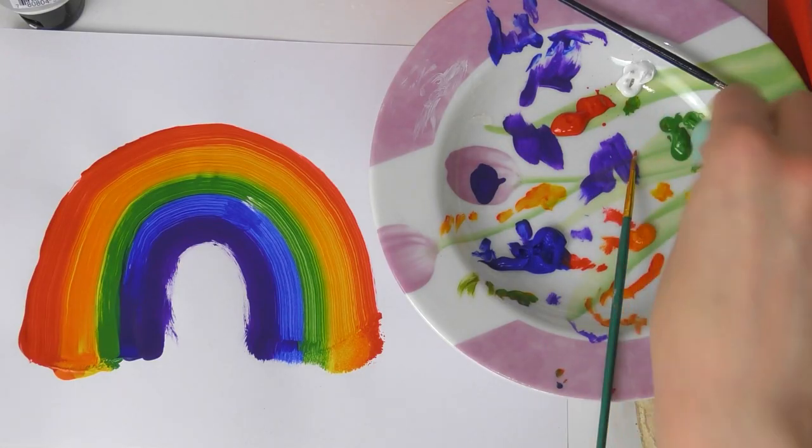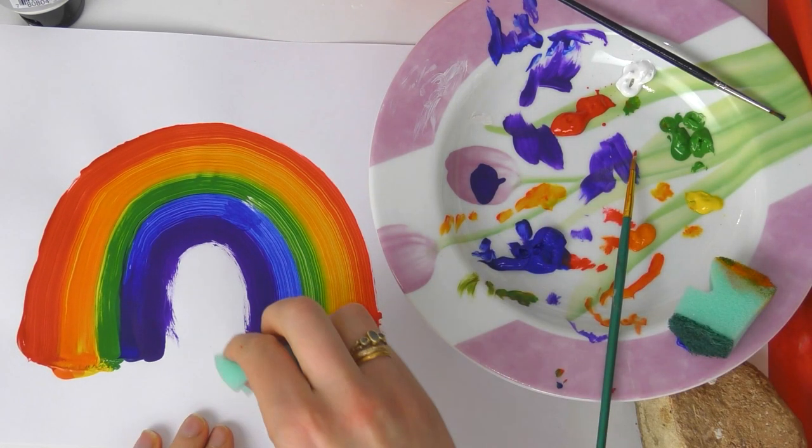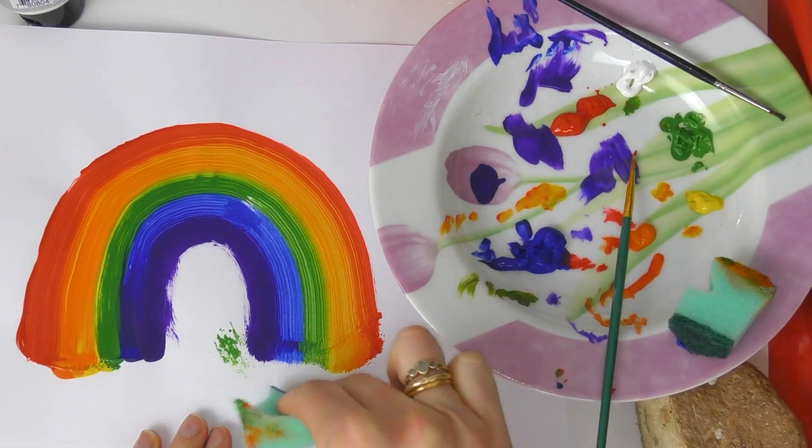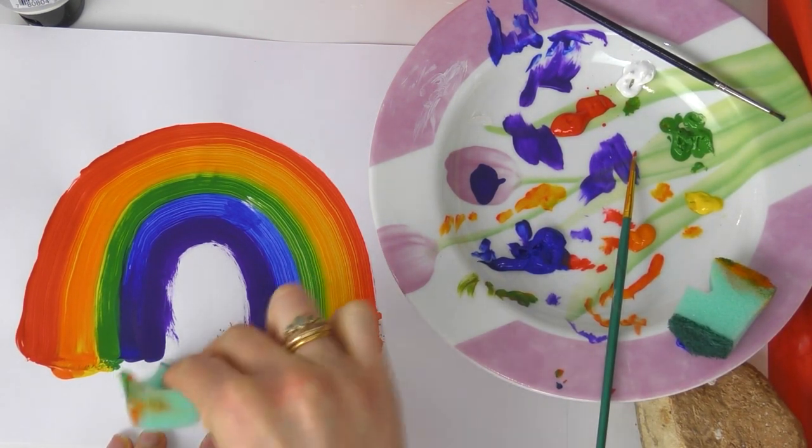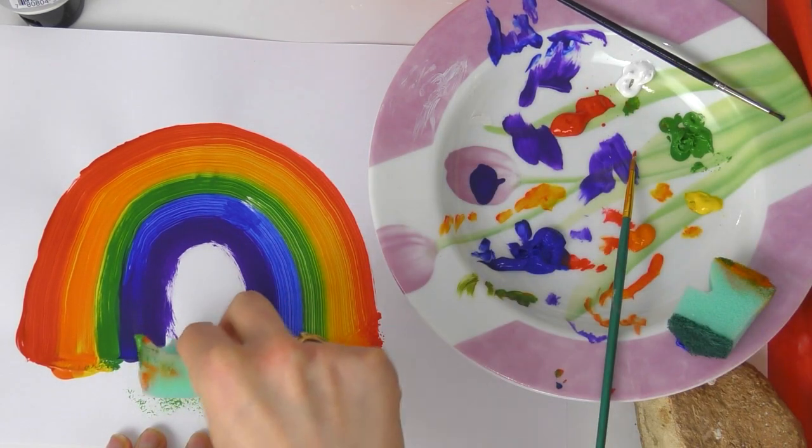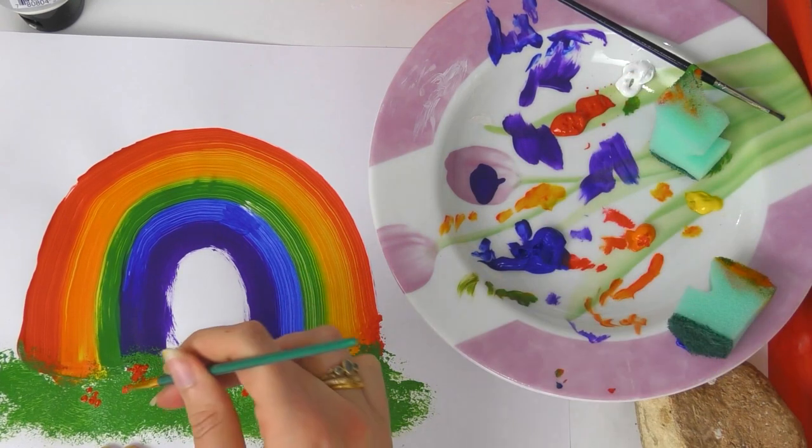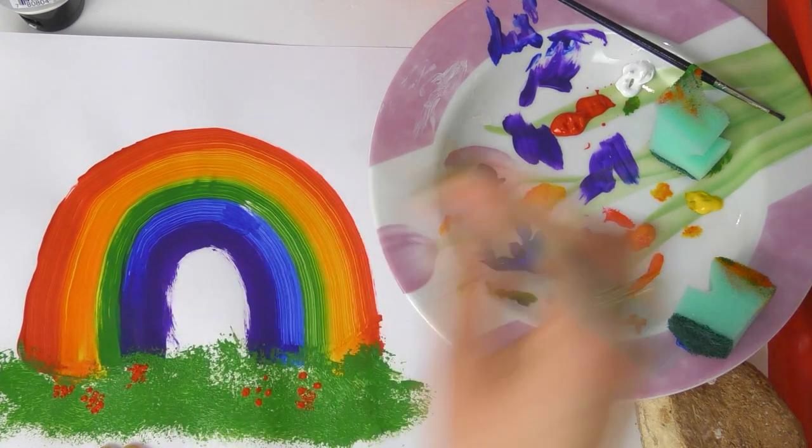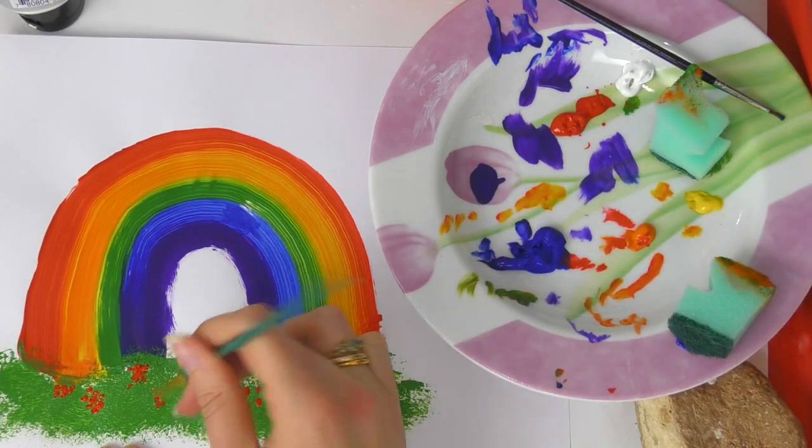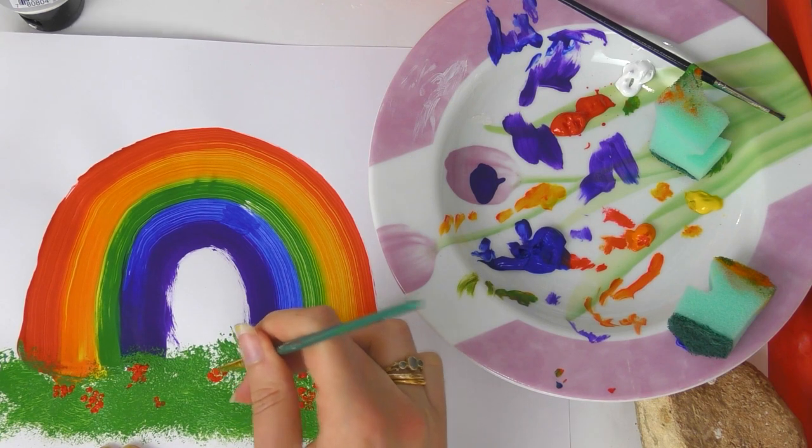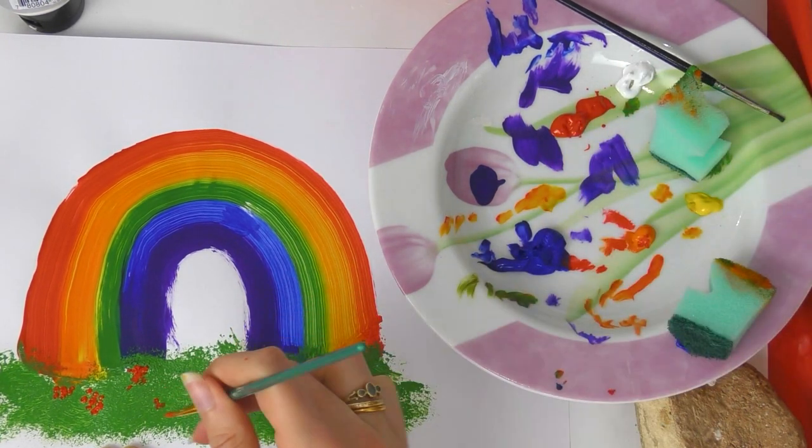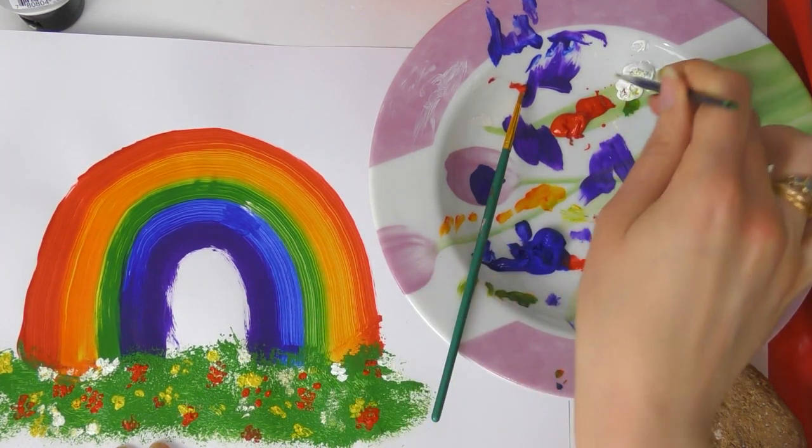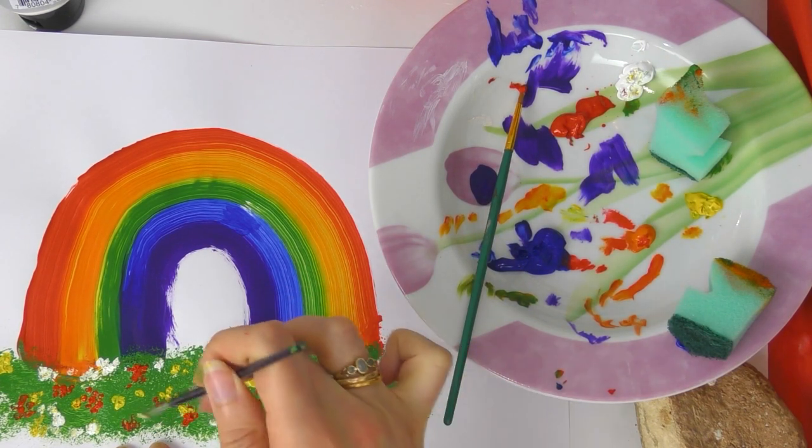Once you have got your rainbow on the page and it is dried, you then need to take the other half of your sponge that you had earlier and with the scrubby bit, you get some green paint and dab on some green grass. The texture of the sponge works really well for this. Then you can add some flowers and this is very easy. All you need to do is add some dots of paint in little clusters and choose three different colors so you don't have too many colors going on at once. You can add a sky and some clouds, you can add whatever you want to your picture, but this is the basic rainbow that you can do with a kitchen sponge.